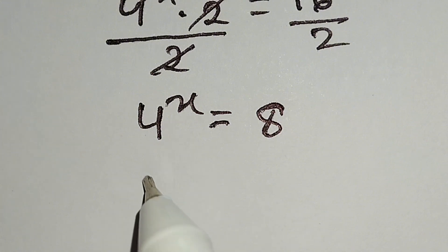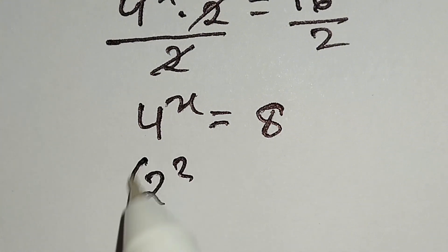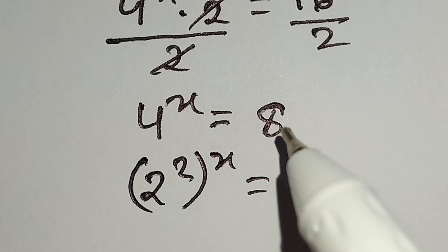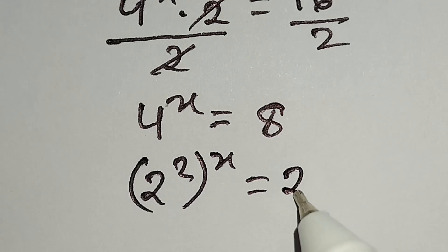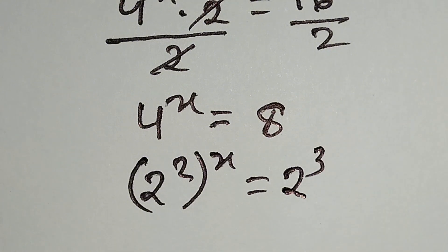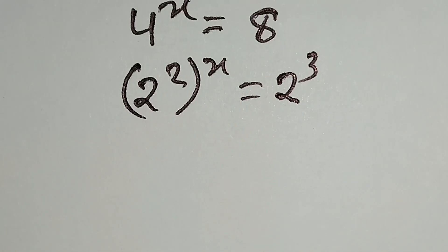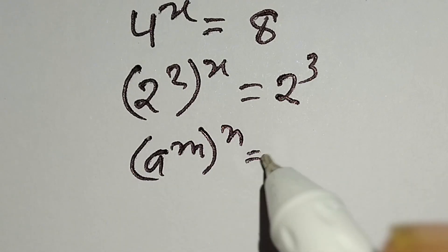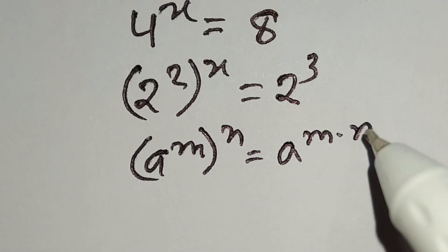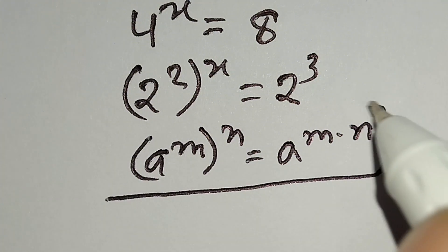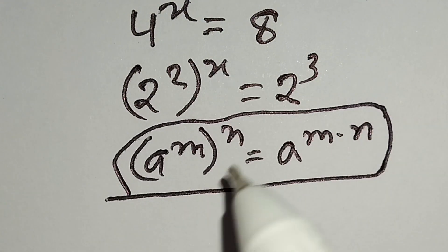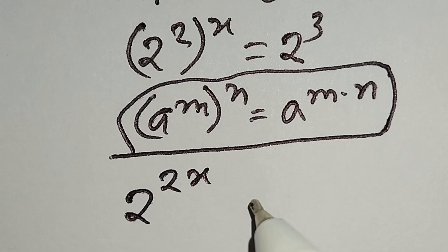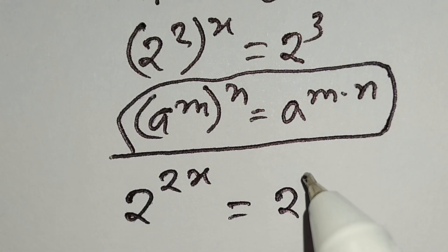We can write 4 as 2 squared, so 2 squared to the power x is equal to 2 to the power 3. We know that a to the power m, whole power n, is equal to a to the power m times n. According to this formula, 2 to the power 2x is equal to 2 to the power 3.